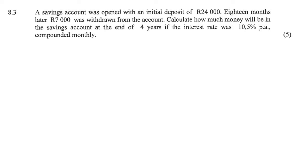A savings account was opened with an initial deposit of 24,000 Rand. So this is definitely for five marks. We're going to use a timeline. 18 months later, 7,000 Rand is withdrawn. Calculate how much money will be in the savings account if the interest rate is 10.5% per annum compounded monthly.